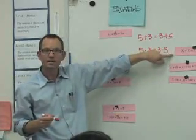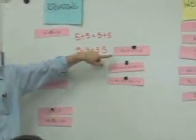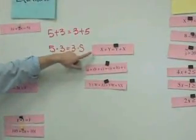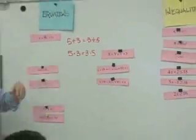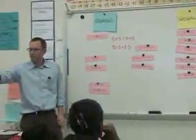Which one's this? Commutative property of addition. Good. Now, you said five and three, and you said five and three.